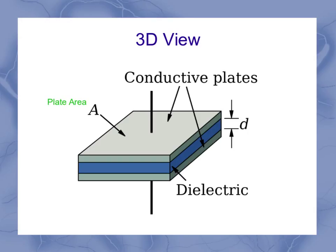So A is our plate area. D is our distance between the plates. And then you've got your dielectric, or it could be empty space. Up to this point, we've been dealing with the case where in between those two plates, it was empty space. Now we're actually going to look at the case where we've got a dielectric in there.